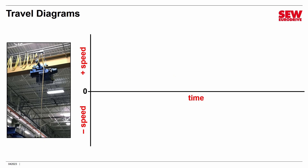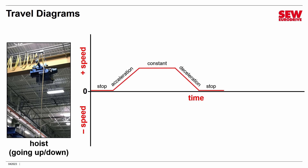Let's make it more complicated — going up and down. We go from stop to acceleration to constant speed, then deceleration and stop hanging in the air. Then coming down: we dip below the x-axis to the negative y-axis, accelerate in the other direction, continue lowering at constant speed, decelerate as we near the floor, and finally come to a stop on the floor. This travel diagram is more dimensional because we have two directions of motion, but the same basic principles apply.